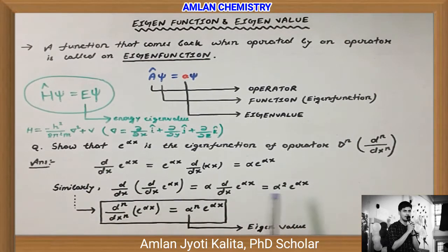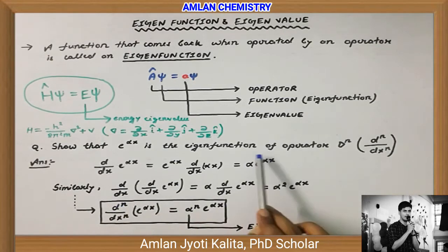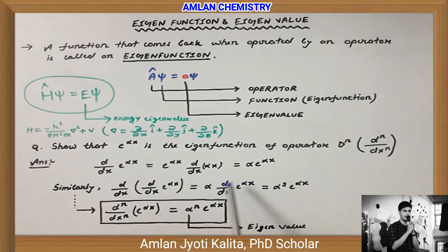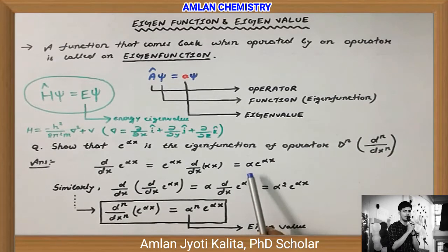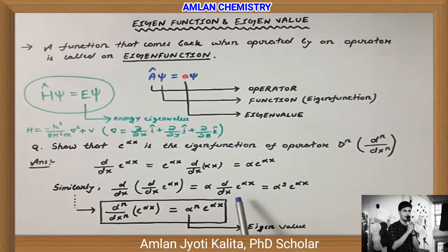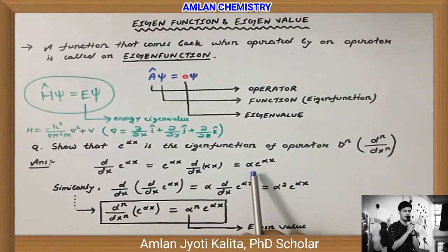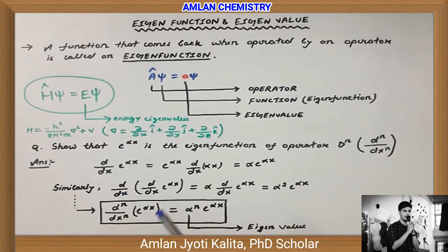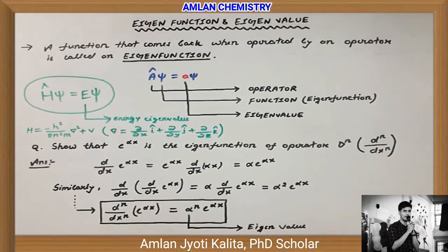Second order differentiation: d/dx of (α · e^(αx)) — α is constant, bahaar aayega, toh α · d/dx of e^(αx). Yeh portion pehle ki tarah same hai, isliye α · (α · e^(αx)) = α² · e^(αx). Similarly, third order differentiation mein milega α³ · e^(αx), fourth order mein α⁴ · e^(αx), and so on.